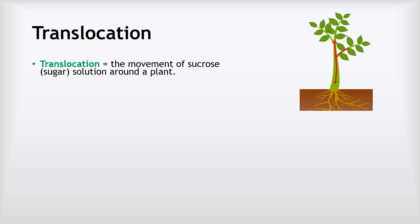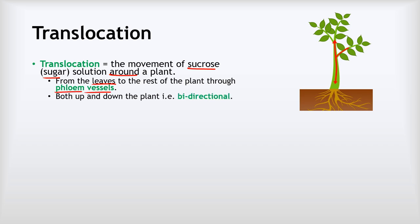Next we have translocation. Translocation is the movement of sucrose or sugar solution around a plant - not just up this time, but actually in both directions, up and down, which we can summarise as 'around.' This takes place starting at the leaves and goes from the leaves to the rest of the plant through a new type of vessel called a phloem vessel. This is both up and down the plant - the fancy word we use for that is bidirectional, meaning two directions, both up and down.